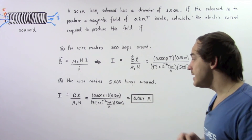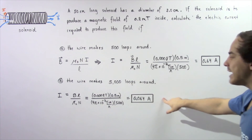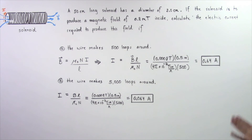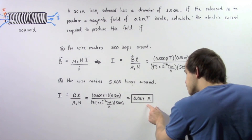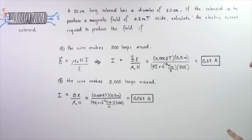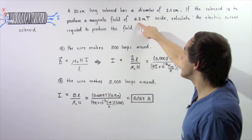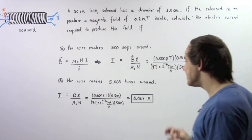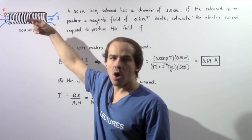Increasing N from 500 to 5,000 means we are decreasing our electric current by a factor of 10. So the electric current in the wire is now 0.064 amps. This shows that if we want to maintain a constant magnetic field at the center while decreasing the electric current, we must increase the number of loops the wire makes.